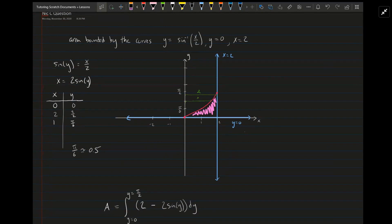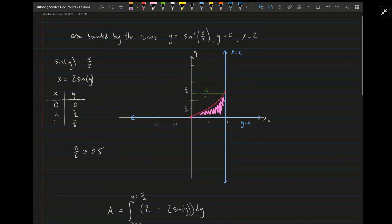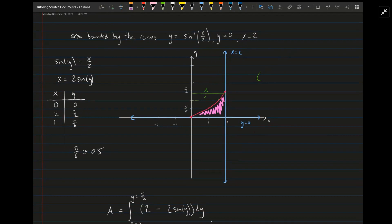It asks for the area of the region bounded by the curves y equals inverse sine of x over 2, y equals 0, and x equals 2. The first thing that I always do with this kind of problem is to draw a picture, a graph, which is what I've done here.